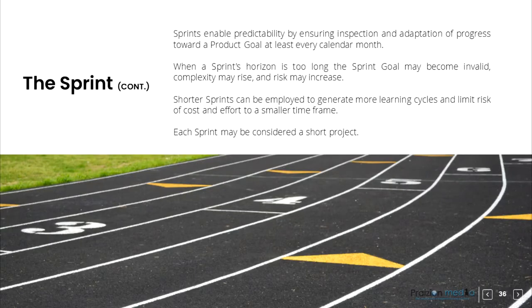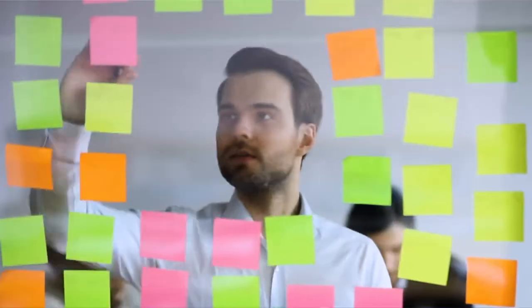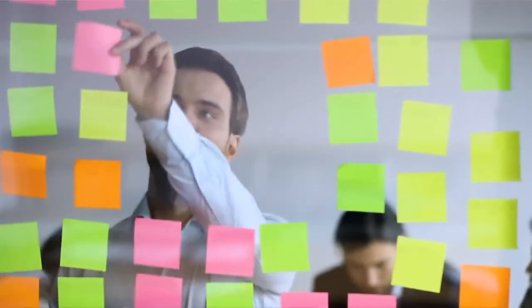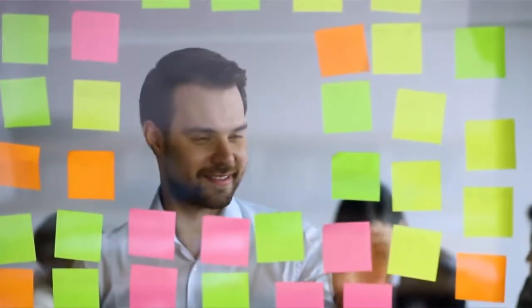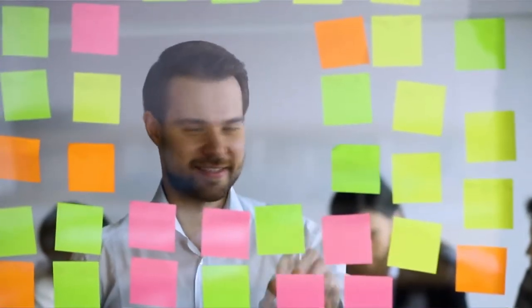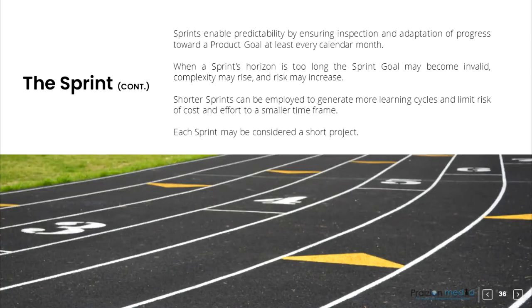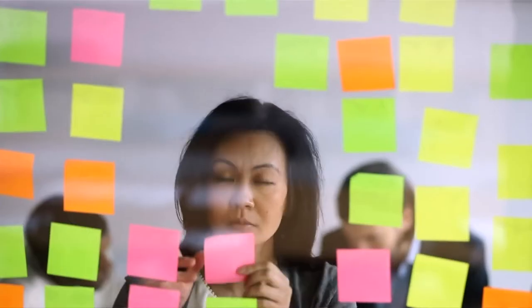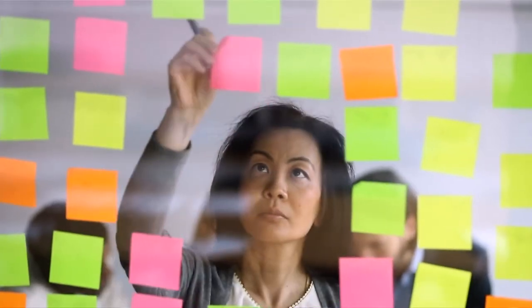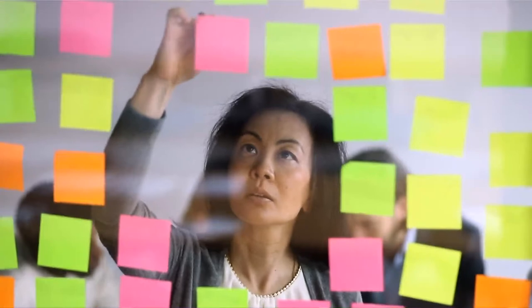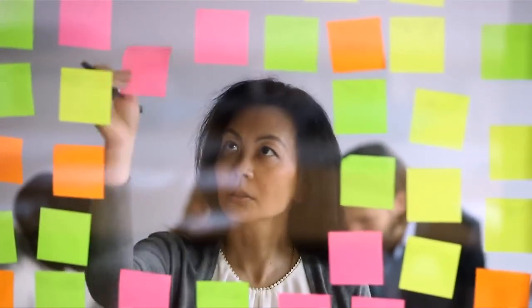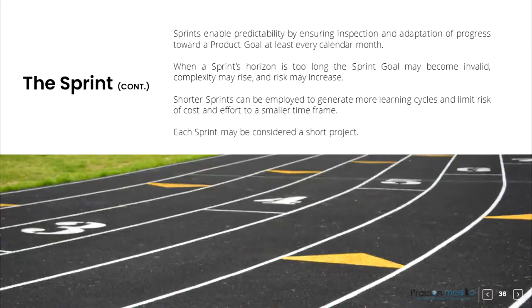Sprints enable predictability by ensuring inspection and adaptation of progress towards a product goal at least every calendar month. When a Sprint's horizon is too long, the Sprint Goal may become invalid, complexity may rise, and risk may increase. Shorter Sprints can be employed to generate more learning cycles and limit risk of cost and effort to a smaller time frame. Each Sprint may be considered a short project.